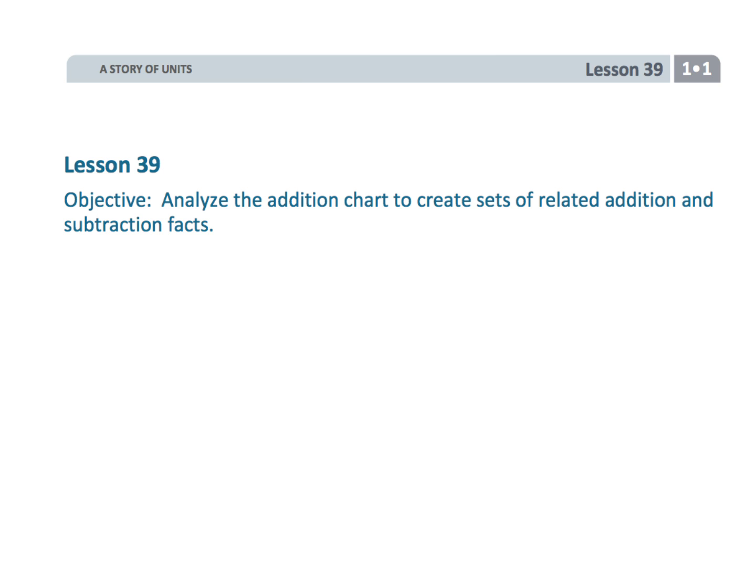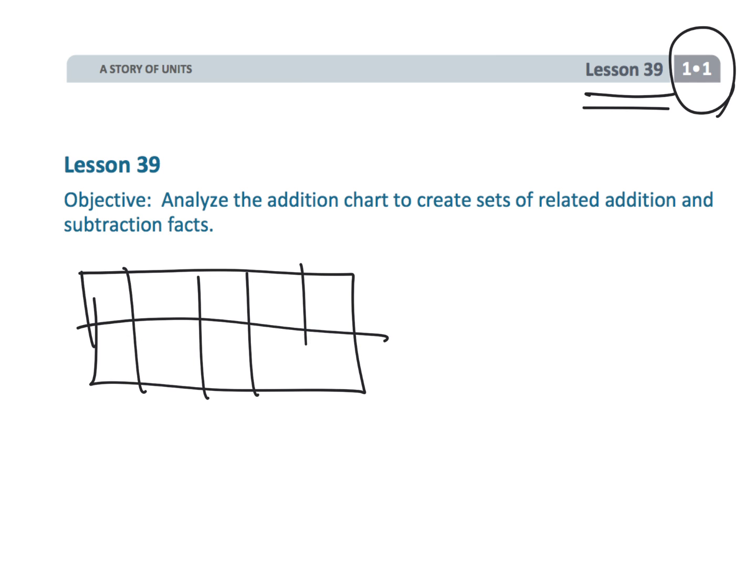And that wraps up first grade module one lesson 39. We've been adding, subtracting, doing all of this mostly within 10, I believe. But really what we want is to create automaticity. We want numbers to be more than just numbers. We want numbers to have a visual component, to be recognized in a 10 frame, to be recognized in a number bond.